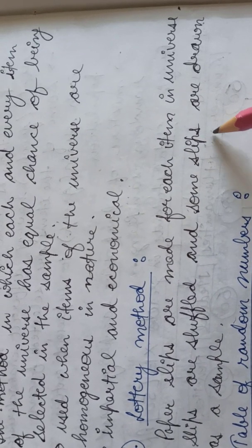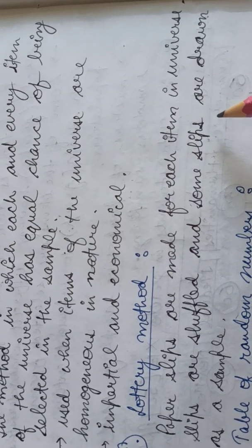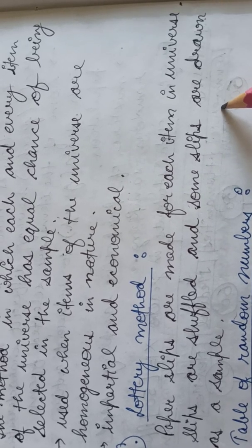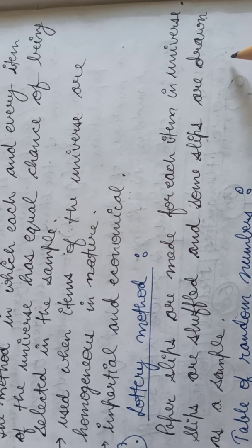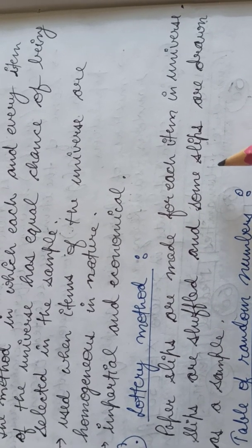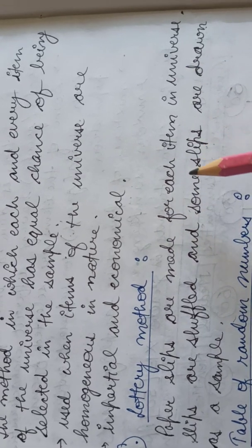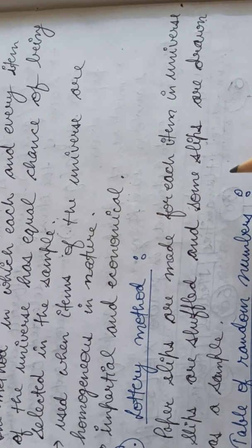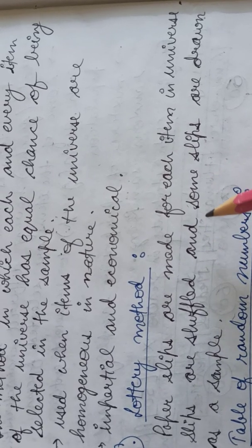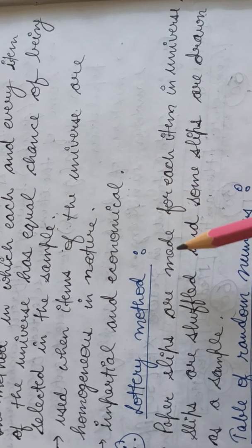For example, if I have to study the economic conditions of workers in a certain factory and the number of workers is very large, I will make slips of their names and shuffle those slips in a box. From those thousand slips of workers, I will take out a hundred slips, and the names of the workers on those slips will be taken as the sample. This was the lottery method.